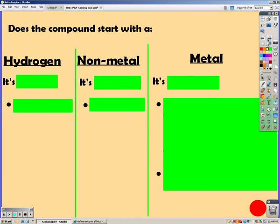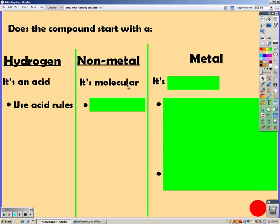So here's a flow chart that can help you figure out what type of compound it is and how you name it. If it starts with hydrogen, it's an acid, and so you have to use acid rules. If it's a non-metal, then it's molecular, and you have to use prefixes, the mono, di, tri, and all of those.